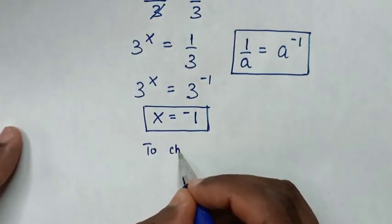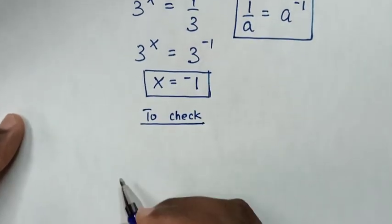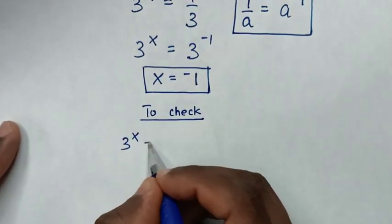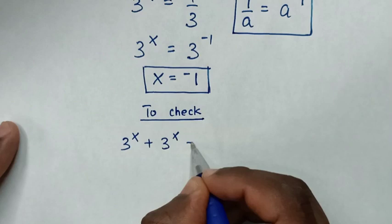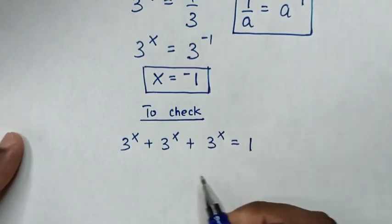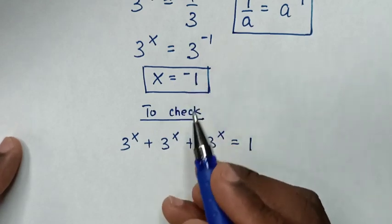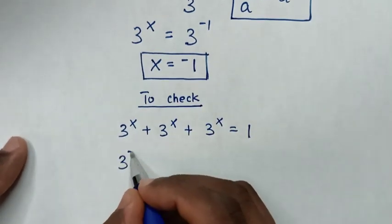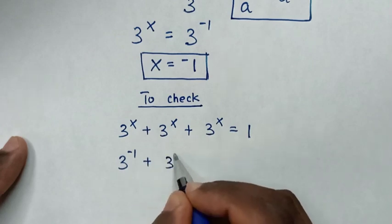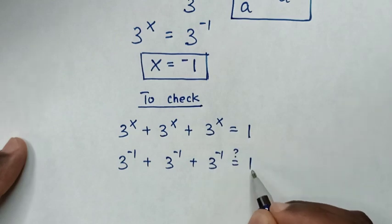to check if the value of x is correct, from our problem which is 3^x + 3^x + 3^x = 1, we'll substitute the value of x into these powers of x, which is -1. So it will be 3^(-1) + 3^(-1) + 3^(-1) = 1.